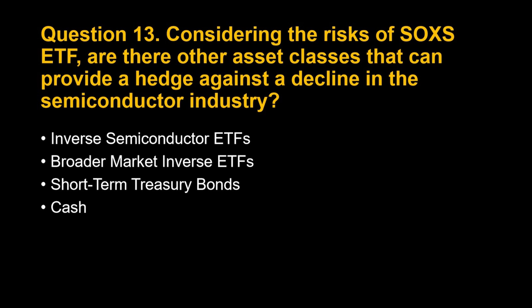Examples include the ProShares Semiconductor Sector Short ETF (SSDX) and the AdvisorShares Dorsey Wright Semiconductor ETN (DSDW). 2. Broader Market Inverse ETFs: These ETFs aim to deliver positive returns when the broader stock market declines. A significant decline in the semiconductor industry is likely accompanied by a broader market downturn, so these ETFs can offer a hedge against such a scenario and provide exposure to a wider range of sectors, offering some diversification benefit.